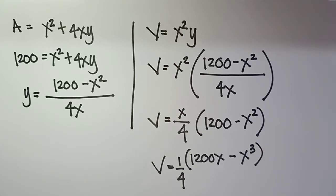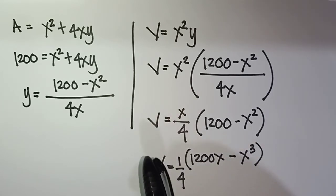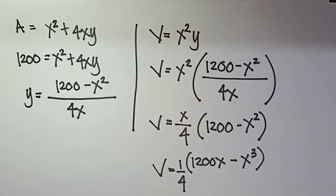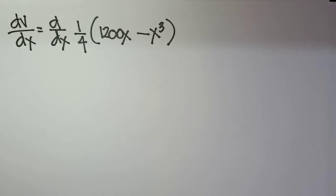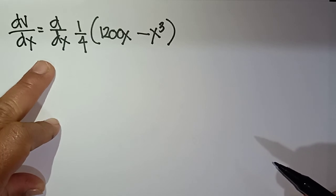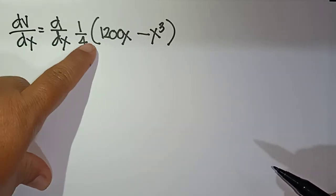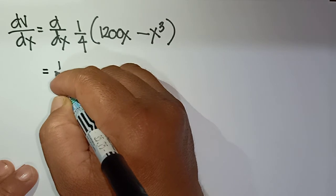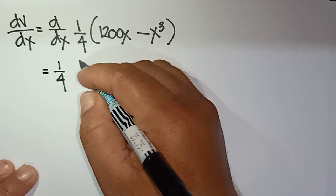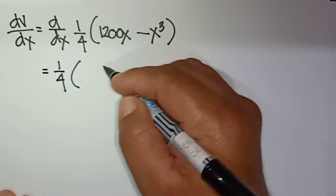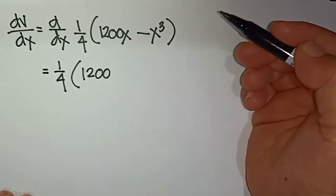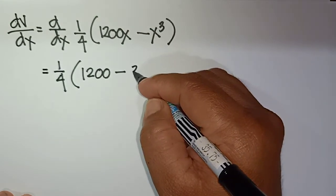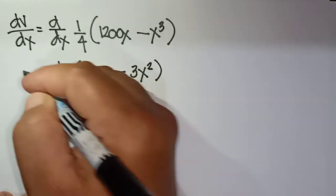To find the largest volume, we take the derivative of the volume. dV/dx = d/dx of (1/4)(1200x − x³), which gives dV/dx = (1/4)(1200 − 3x²).